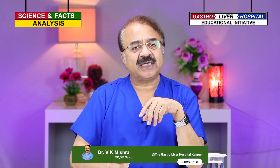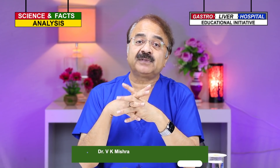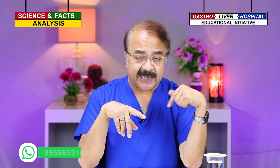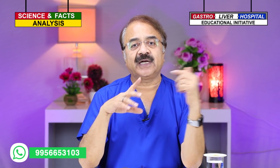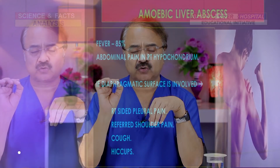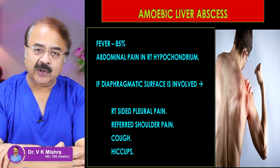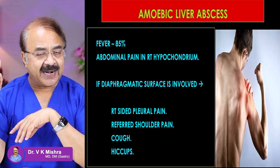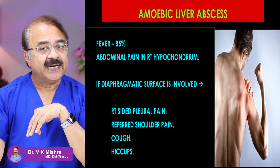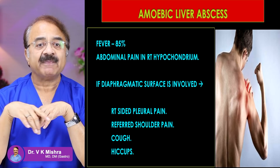The development of amoebic liver abscess is usually fast. Scientifically, once amoeba reaches inside the liver, it is believed that an amoebic liver abscess can develop within two to four weeks. As for symptoms, fever will come with chills and rigors, and high-grade fever will develop in about 85% of people.